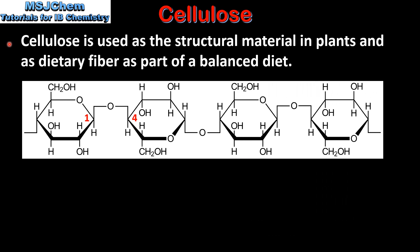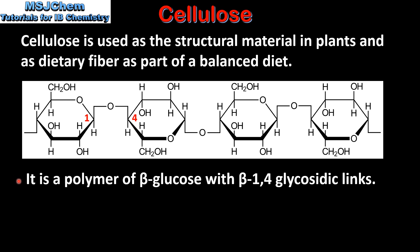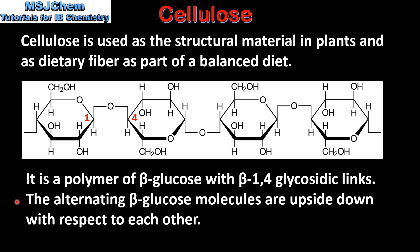And finally we look at the structure of cellulose. Cellulose is used as the structural material in plants and as dietary fibre as part of a balanced diet. It is a polymer of beta glucose with beta 1,4 glycosidic links. Here we have a section of a cellulose molecule. The monomers are beta glucose molecules and they are bonded with beta 1,4 glycosidic links. The alternating beta glucose molecules are upside down with respect to each other, as we can see in the structure.